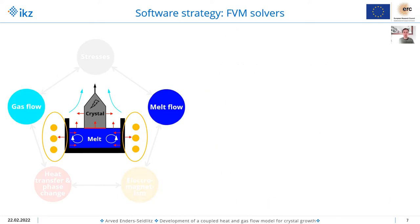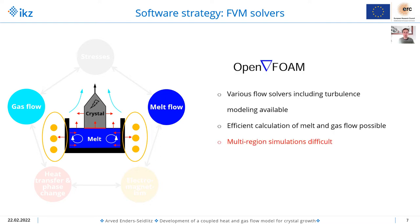For the gas and melt flow we want to use the finite volume method and decided to use OpenFOAM, because there are various solvers available including the turbulence models that we want to use. With this it's possible to compute the melt and gas flow very efficiently. The problem with OpenFOAM is that multi-region simulations are a bit difficult, and therefore we want to use it in a coupled manner.